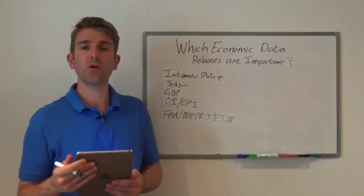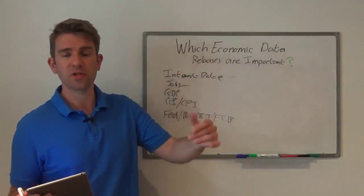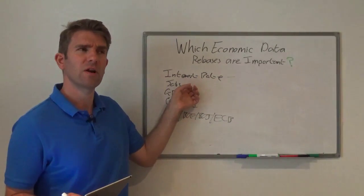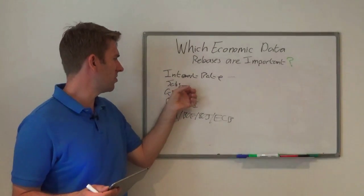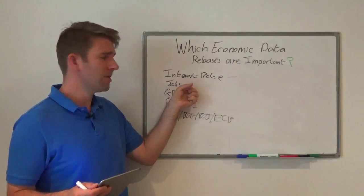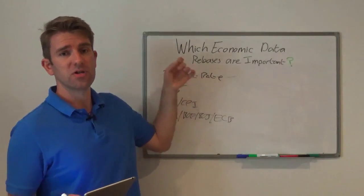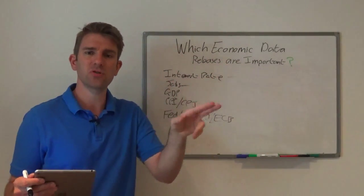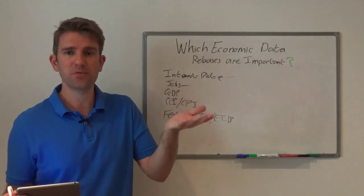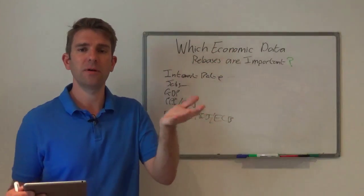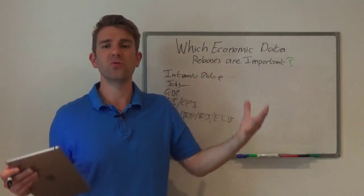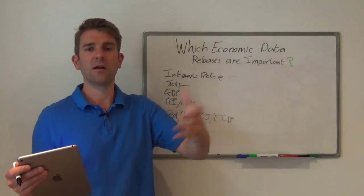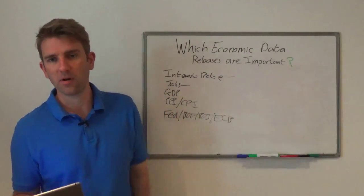Jobs numbers: that could be things like non-farm payroll jobs number which we have in the US on certain Fridays. That comes out as a big jobs number. We have jobs numbers every Thursday which is just a normal jobs number. What you're looking at there is a pulse on the economy. If jobs are increasing, if unemployment is decreasing, then the idea is the economy is doing well, companies are doing well, therefore stocks should do well, and accordingly with the dollar or whatever currency.